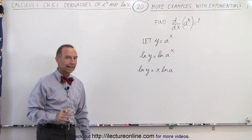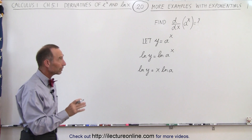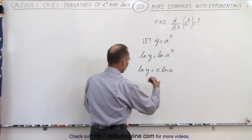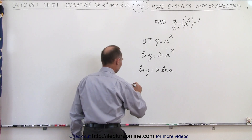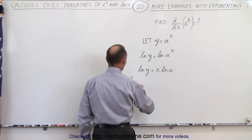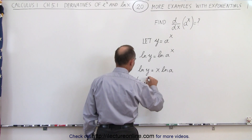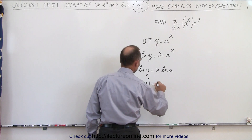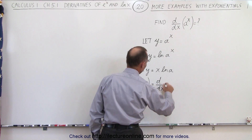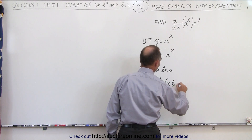Now I can take the d/dx — the derivative with respect to x — of both sides of the equation. So now we're going to do an implicit differentiation. We take the d/dx of the left side, which is the natural log of y, and set it equal to the d/dx of the right side, which is x times the natural log of a.